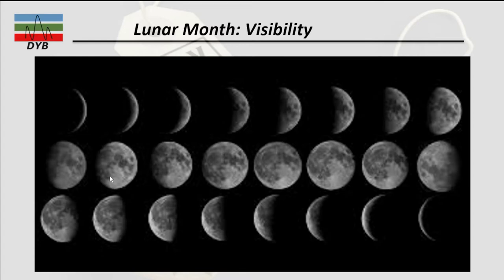From this figure, with the sun here, the moon starts small, grows bigger and bigger, until we have the full moon visible in the middle of the month. After the full moon it gets smaller and smaller, and then disappears for one day.